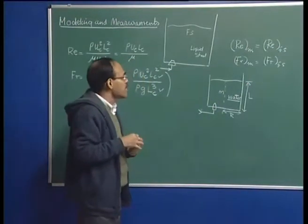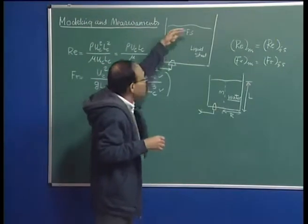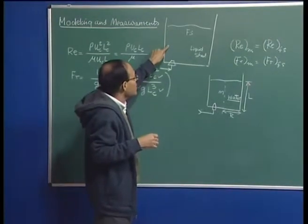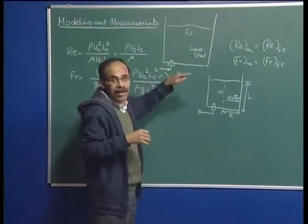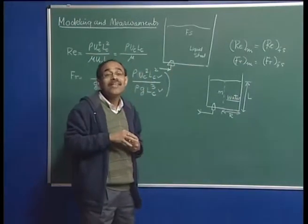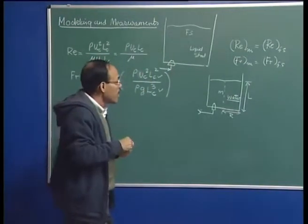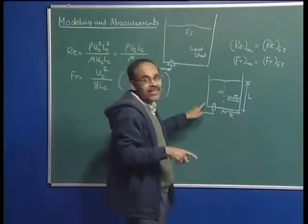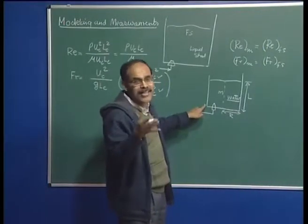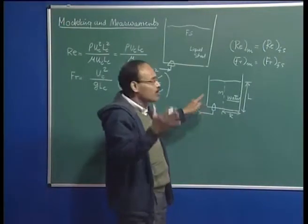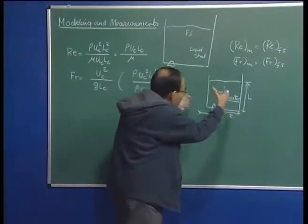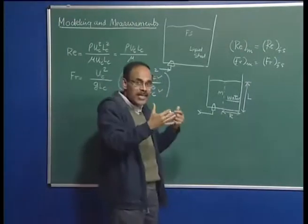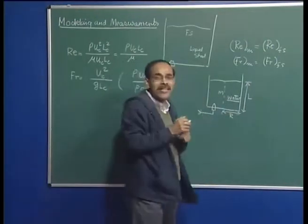I can mathematically model the flow in the system and map the velocity field — this is called scientific visualization. On the other hand, if I create a water model, I can physically see how the flow is going on, provided the vessel is made of a transparent material like perspex or glass. This is called physical visualization. When I construct a physical visual model, I am examining the possibility of physical visualization of the flow.